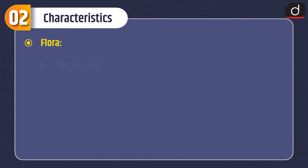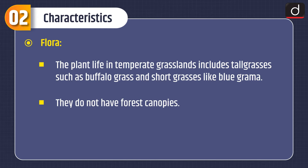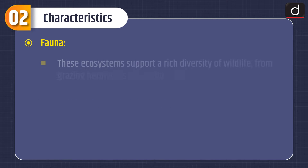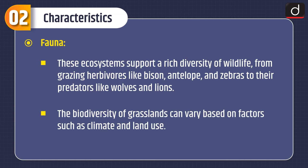Flora: the plant life in temperate grasslands includes tall grasses such as buffalo grass and short grasses like blue grama. They do not have forest canopies. Fauna: these ecosystems support a rich diversity of wildlife, from grazing herbivores like bison, antelope and zebras, to their predators like wolves and lions. The biodiversity of grasslands can vary based on factors such as climate and land use.